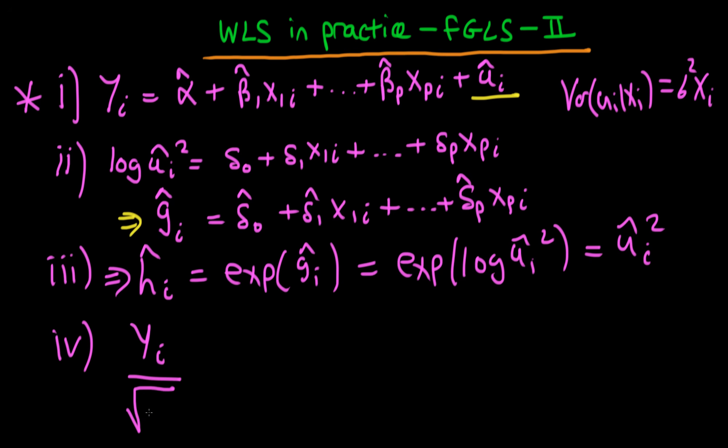what we do is we divide through by the square root of ĥᵢ, and we do that to both sides of our initial regression which is this top thing up here. So we have the regression of yᵢ over the square root of ĥᵢ.